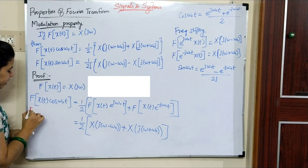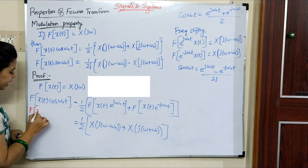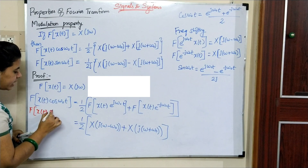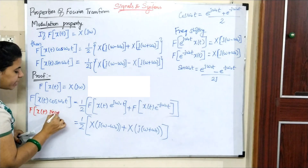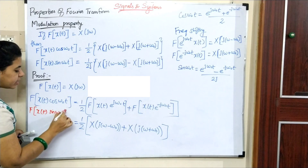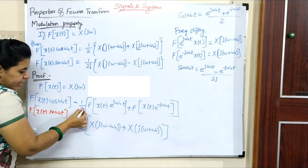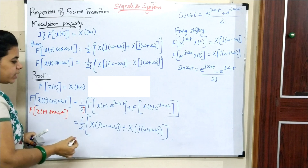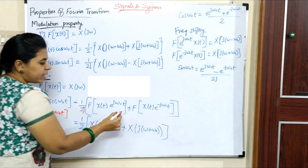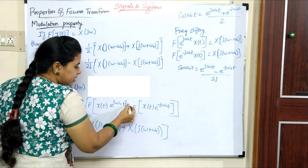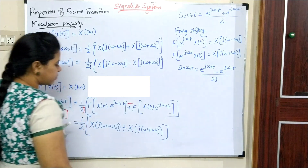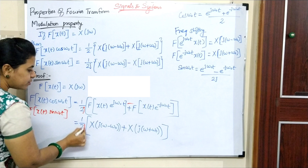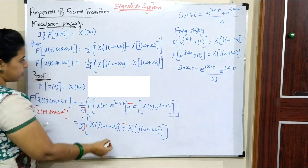This gives (1/2)·[X(j(ω−ω₀)) + X(j(ω+ω₀))]. For x(t)·sin(ω₀t), we represent sin(ω₀t) = [e^(jω₀t) − e^(−jω₀t)]/(2j), giving Fourier transform equal to (1/2j)·[X(j(ω−ω₀)) − X(j(ω+ω₀))].